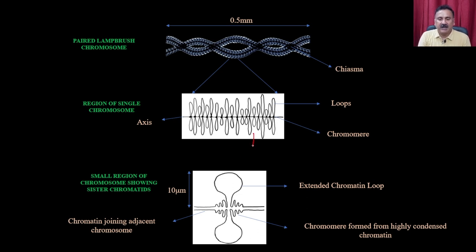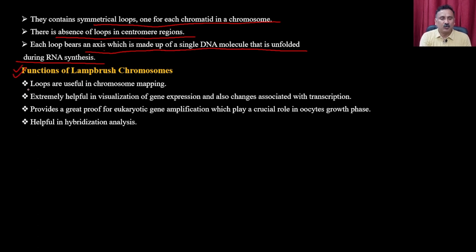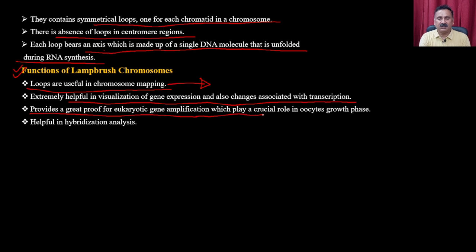Lampbrush chromosomes are transcriptionally very active, with regions available for transcription and translation. They contain symmetrical loops, one per chromatid, with absence of lesions in the centromere region. Each loop bears an axis made up of a single DNA molecule that unfolds during RNA synthesis. Their functions include chromosomal mapping, visualization of gene expression and transcription-associated changes, evidence for eukaryotic gene amplification crucial to oocyte development, and use in hybridization studies.